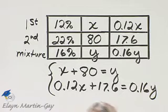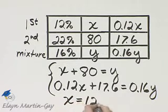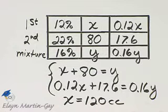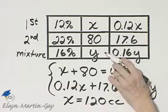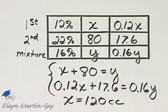When you do, you'll have that X, which is the amount we're looking for, is 120 cubic centimeters. X is 120. You want to know what Y is? Y is 120 plus 80, or 200 cubic centimeters.